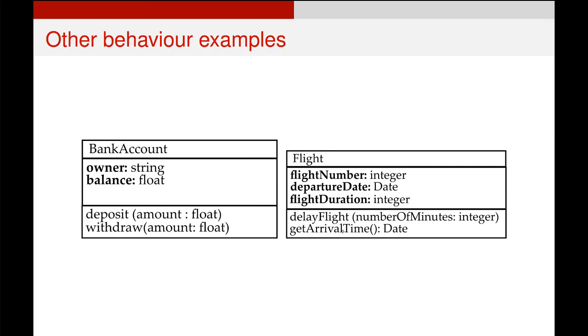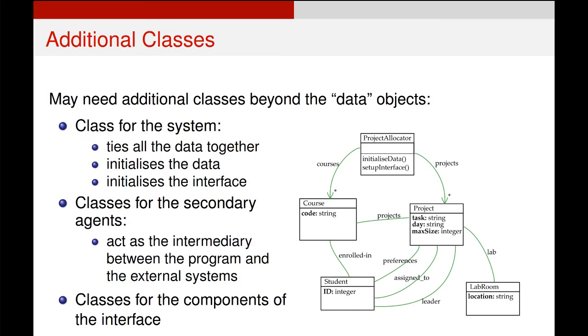You'll notice getArrivalTime is not one of these core fields, so it's not covered by the basic getters and setters. It would return a date object. Those few examples should show you how to display parameters, arguments, and return values on class diagrams.